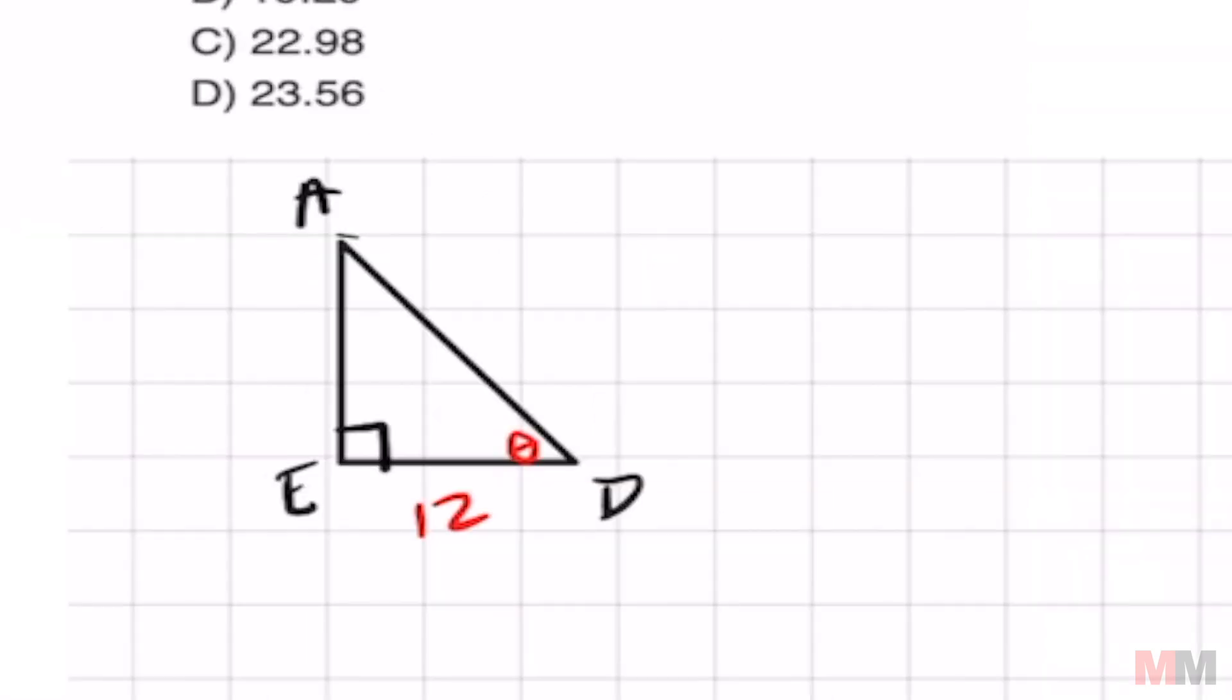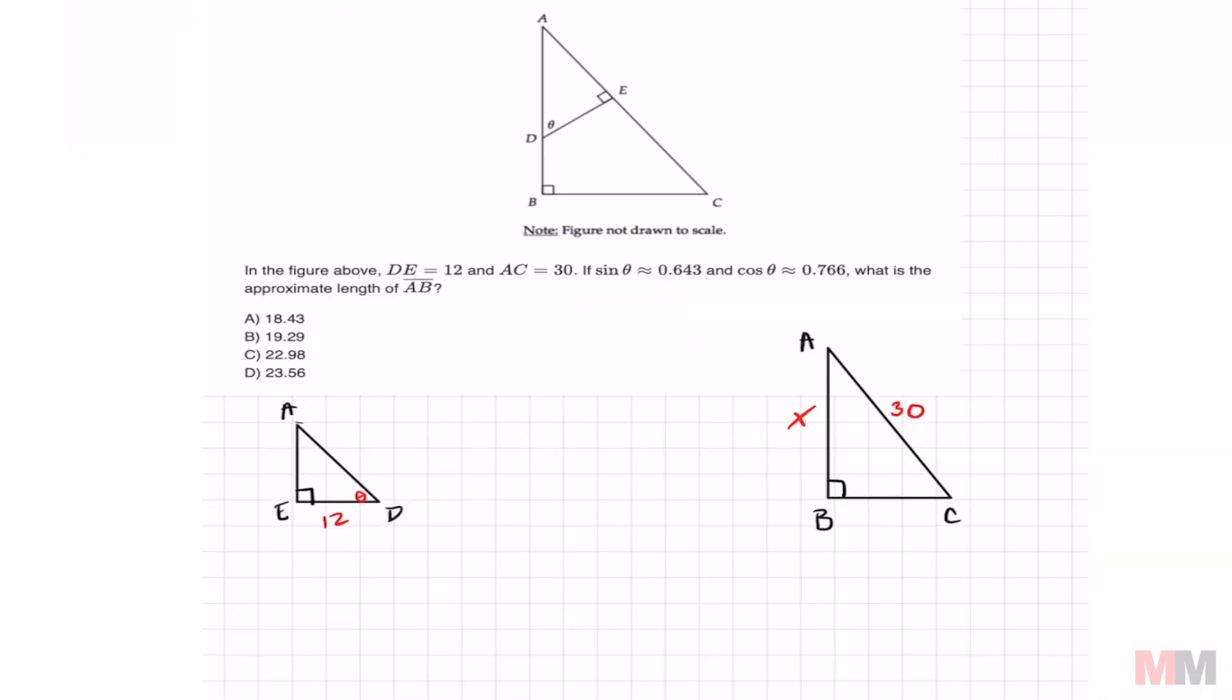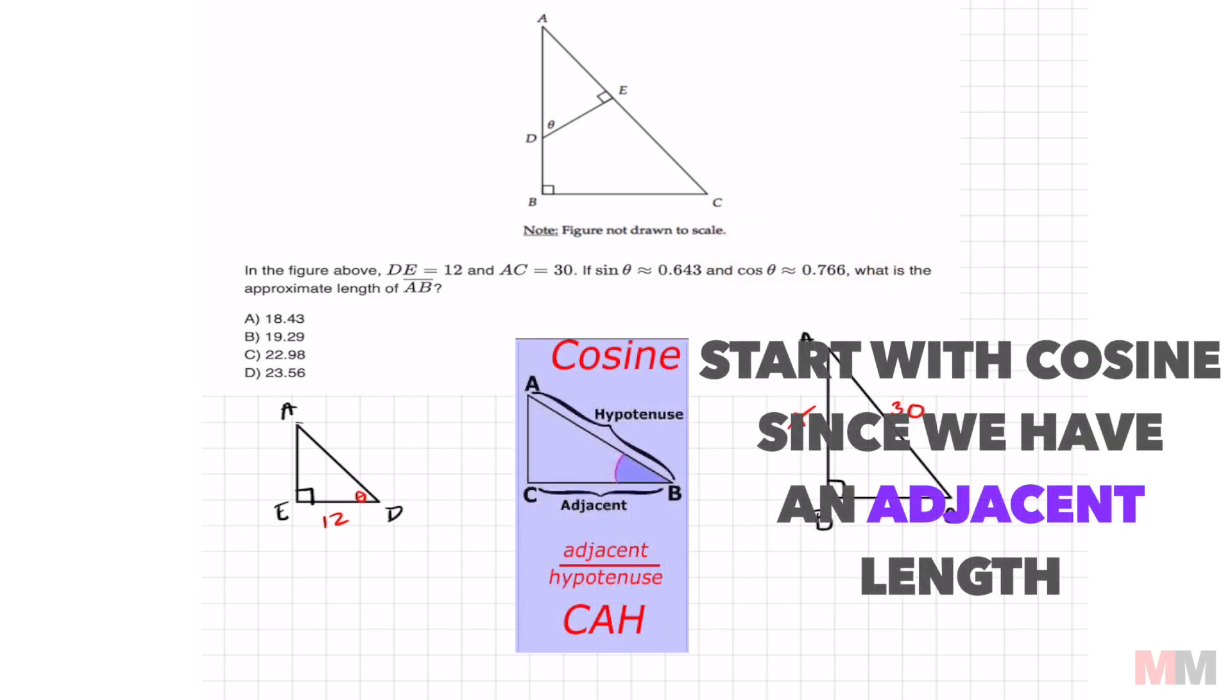Focus on the mini triangle first and if this is labeled as theta then this would be my adjacent leg. If I got an adjacent length then that tells me that I need to start with cosine theta first and that's going to help me find this hypotenuse. Let's just call the hypotenuse Y.